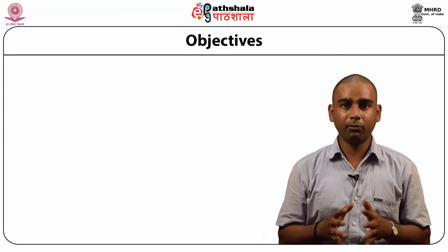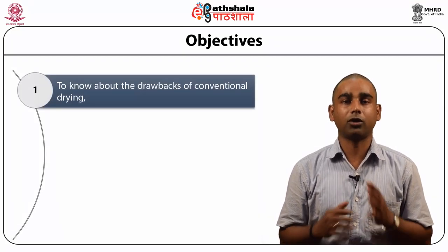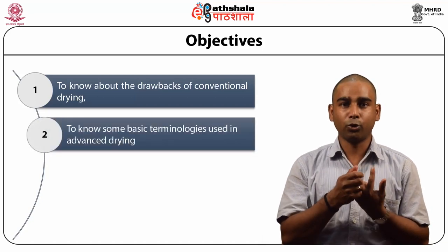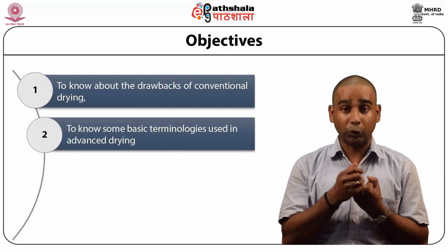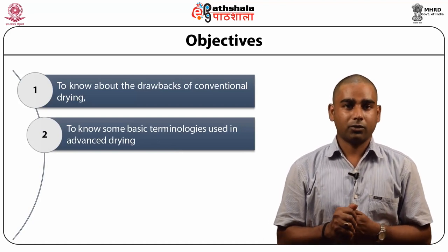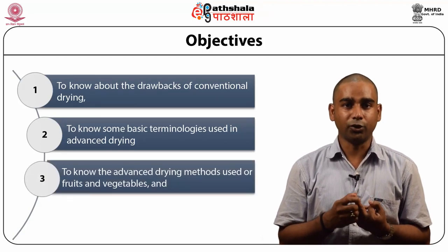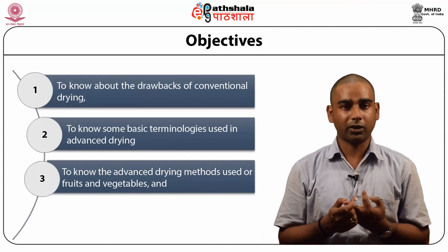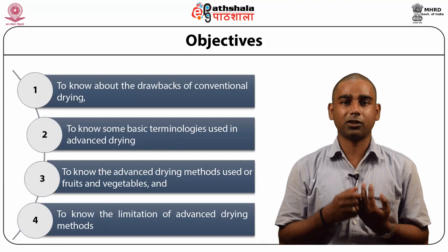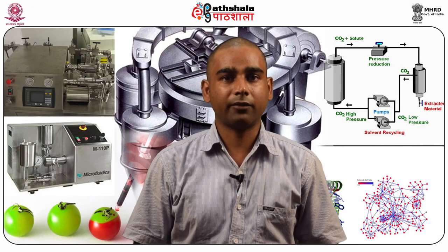The objective of today's lecture is to know about the drawbacks of conventional drying, to know some of the basic terminology used in advanced drying, to know the advanced drying methods used for fruits and vegetables, and at last to discuss some of the limitations of advanced drying methods.